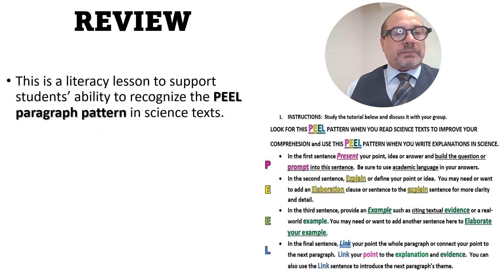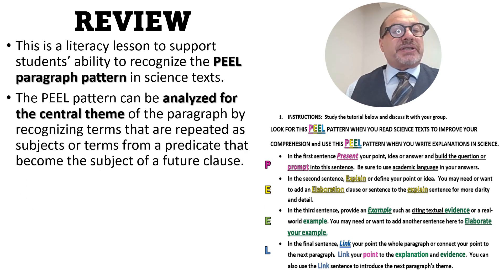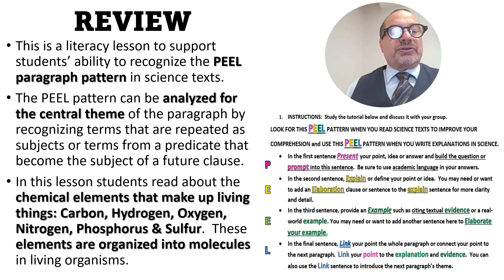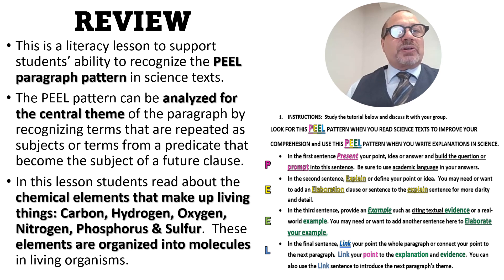So our review: this is a literacy lesson to support students' ability to recognize the PEEL paragraph pattern in science. The PEEL pattern can be analyzed for the central theme of the paragraph by recognizing terms that are repeated as the subject, or terms from a predicate that become the subject of future clauses. In this lesson, students read about the chemical elements that make up living things — carbon, hydrogen, oxygen, nitrogen, phosphorus, and sulfur. These elements are organized into molecules in living things, and those molecules are often monomers or small molecules which join together to make large molecules called macromolecules or polymers. Thank you so much for your attention and hard work.